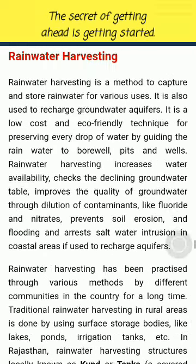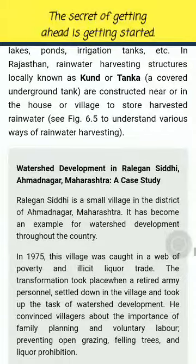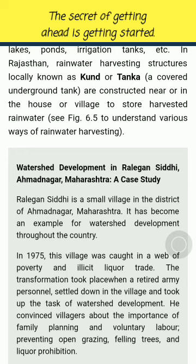Rainwater Harvesting: Rainwater harvesting is a method to capture and store rainwater for various uses and to recharge groundwater aquifers. It is a low-cost and eco-friendly technique for preserving every drop of water by guiding the rainwater to borewells, pits and wells. Rainwater harvesting increases water availability, checks the declining groundwater table, improves the quality of groundwater through dilution of contaminants like fluoride and nitrates, prevents soil erosion and flooding, and arrests saltwater intrusion in coastal areas if used to recharge aquifers. Traditional rainwater harvesting in rural areas is done using surface storage bodies like lakes, ponds and irrigation tanks. In Rajasthan, rainwater harvesting structures locally known as Kund or Tanka — a covered underground tank — are constructed near or in the house or village to store harvested rainwater.